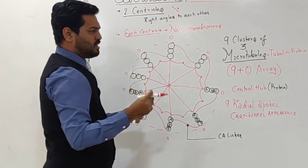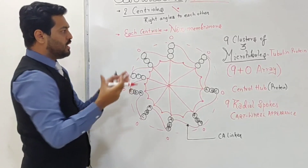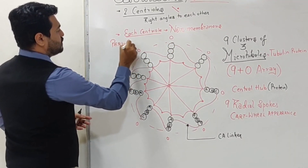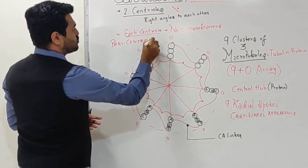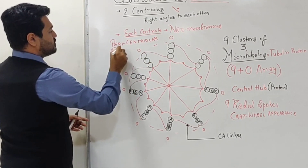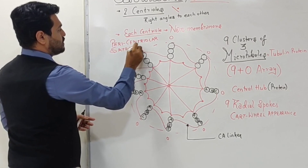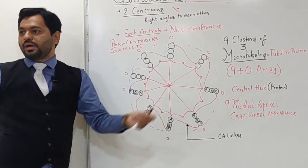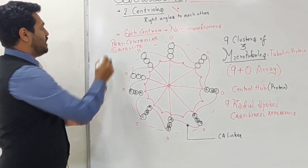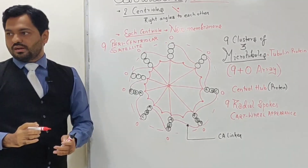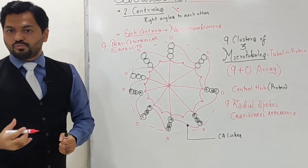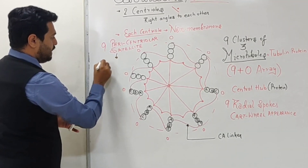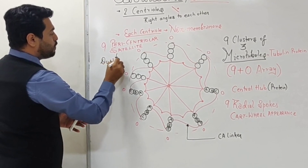In the periphery of the centriole, there is also presence of an amorphous (granular or powdery form) structure known as pericentriolar satellite. There are 9 pericentriolar satellites. Their function, if asked in NEET, is their role in the process of duplication of centrioles.